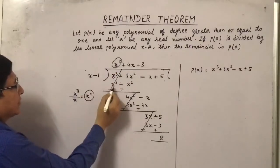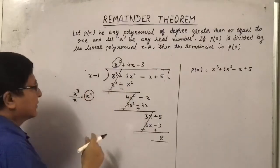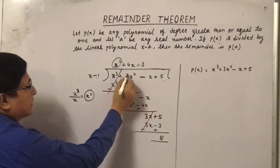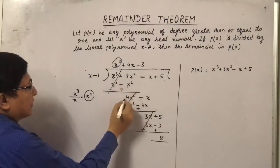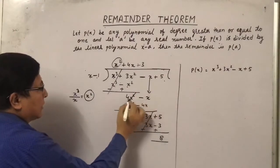So x square into x will become x cube and x square into minus 1 will become minus x square. Now I will subtract by changing the sign, this will cancel. So 3 x square plus x square will become 4 x square. Now I will copy this minus x here.